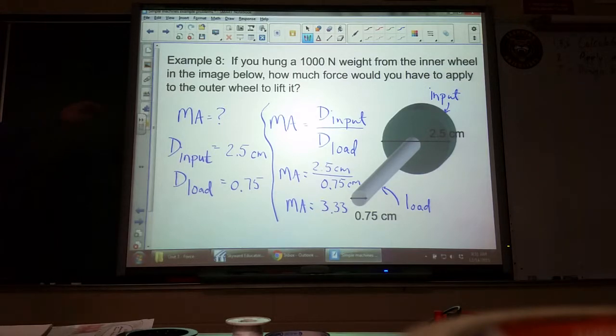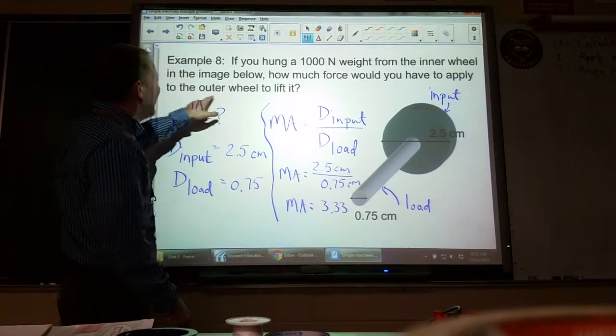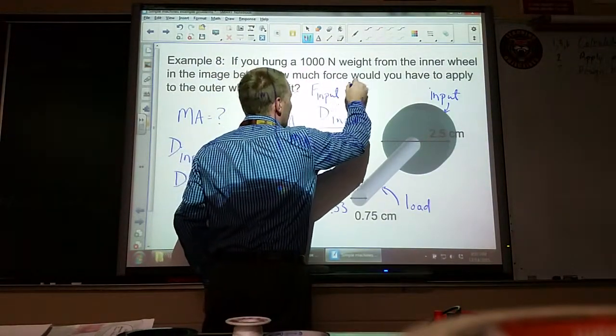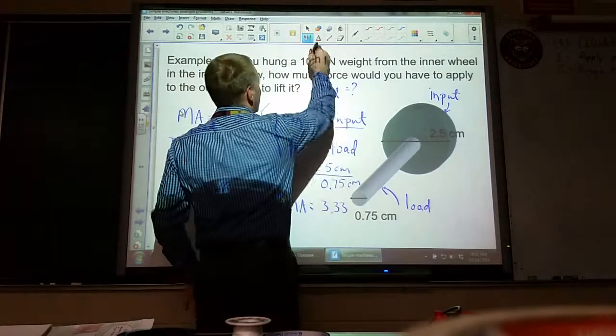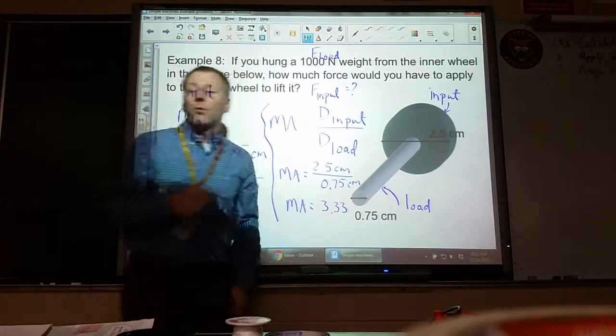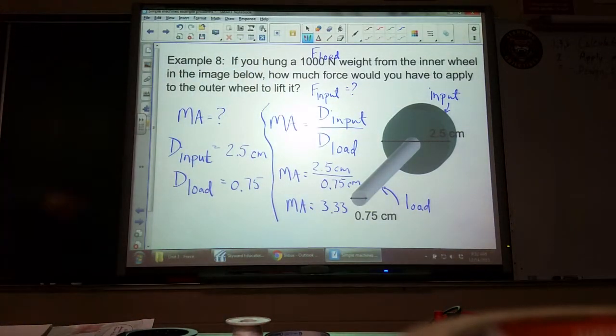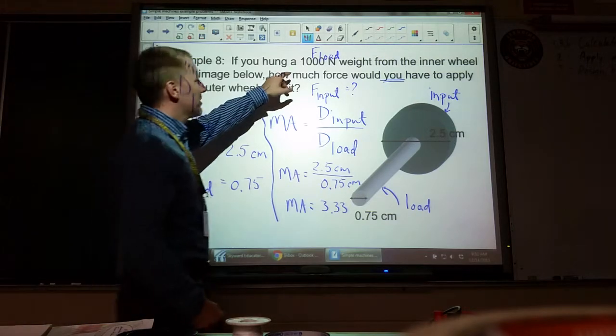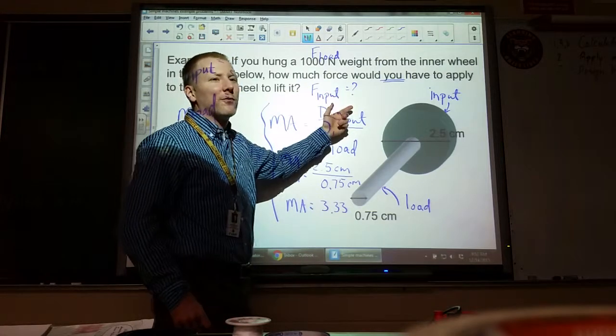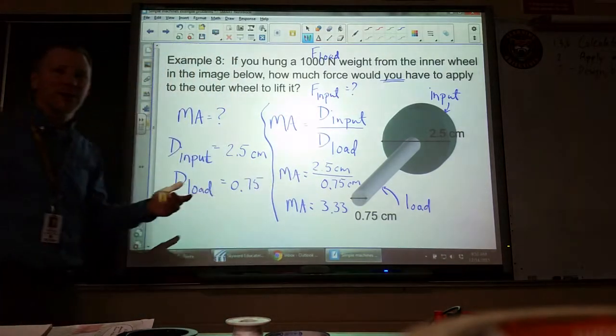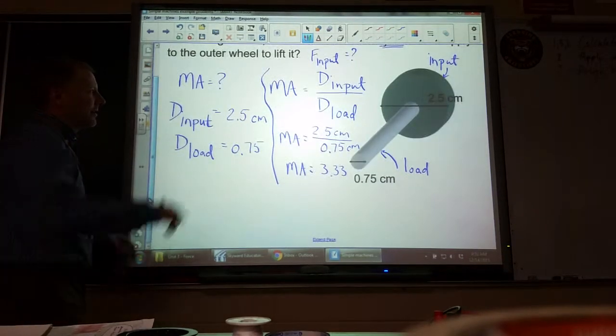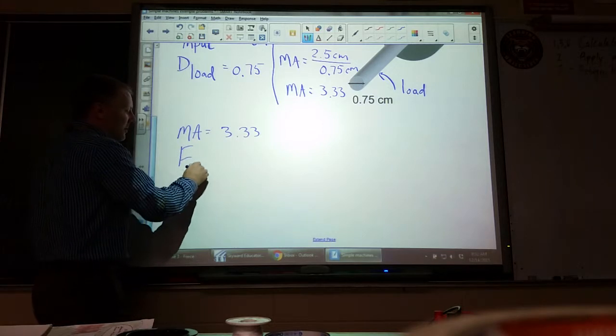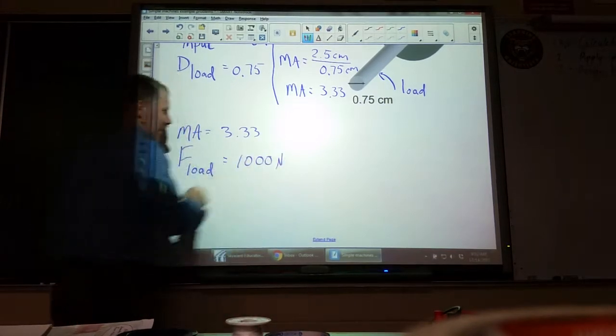That's the mechanical advantage. Now looking back up here, it says how much force would I need to apply? I need to find F_input. That's what led me down here. I've got an F_load, that's our load that we're lifting, that's what the machine is lifting up, so that's the load. We are asked to find how much force would you have to apply, so that tells us it's an F_input. When I was looking at this I said, well I've got a load force here, I want to find an input force, I need to find the mechanical advantage in order to do that. Now going back here, we just said our mechanical advantage is 3.33, our load force was a thousand newtons, and we want to find input force.